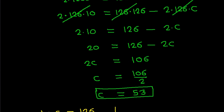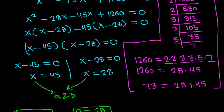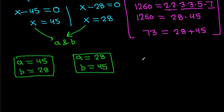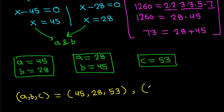We know the roots of this equation are A and B, and we have C equals 53. So the sides A, B, C can be 45, 28, 53 or equivalently 28, 45, 53.